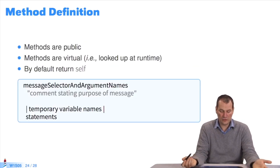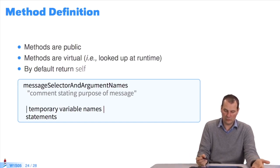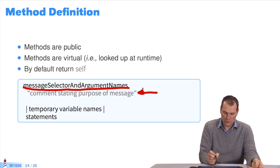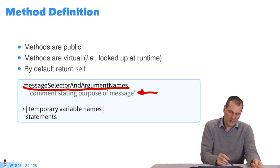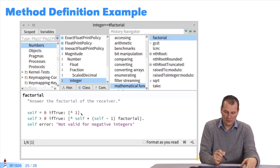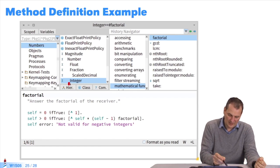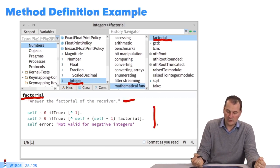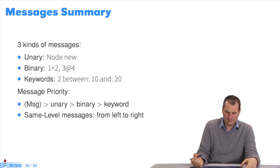How do we define a method? As I said, the methods are public and virtual and by default return self. When you're in the browser, it suggests a template — the name of the potential method and a comment. We comment on our code. We can also put temporary variable names and statements. We've seen the method factorial — here, in the class Integer, I look at the method factorial. I have its code with the name of the method, its comment, and the body of the method that I've defined.